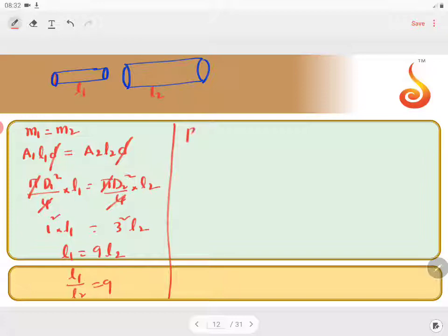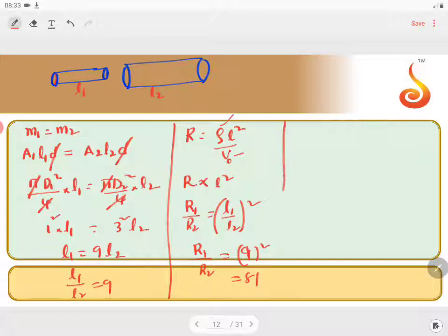Now resistance is given by Rho L2 by V0 where V0 is volume. Rho and volume are same. So resistance is proportional to L2. Now R1 by R2 equal to L1 by L2 whole square. R1 by R2 is equal to 9 whole square that is equal to 81. Ratio of resistances will be 81 is to 1.